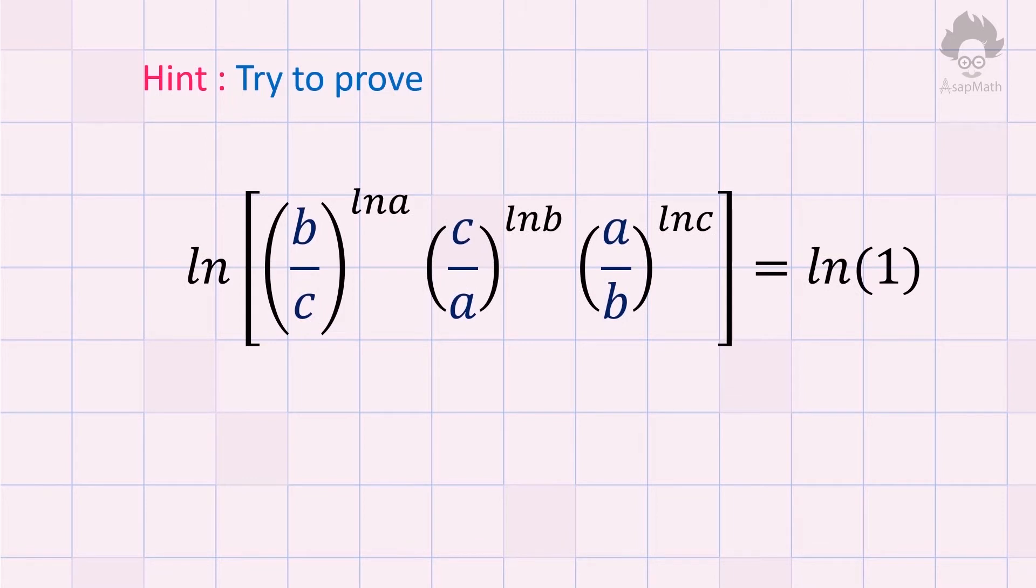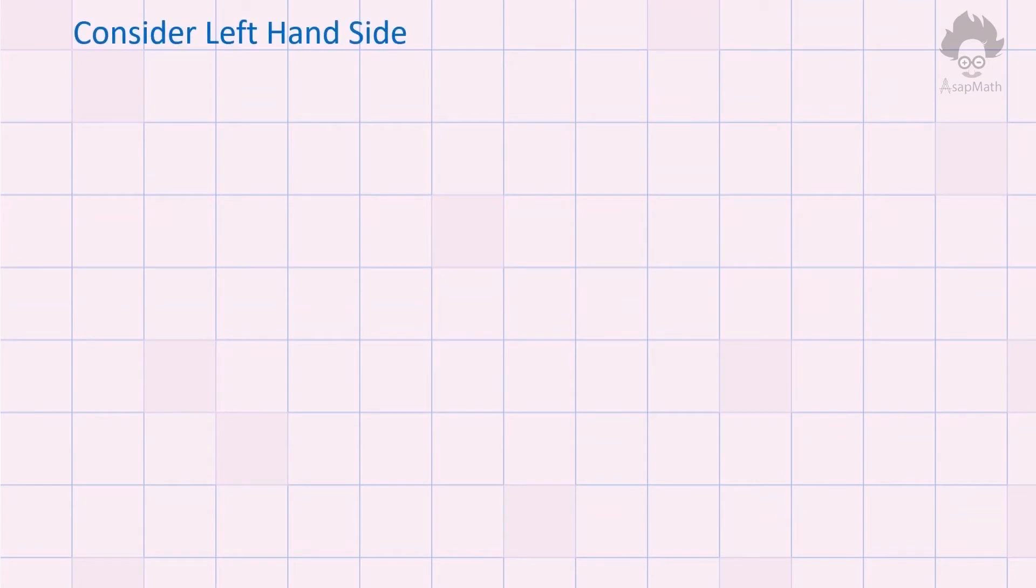Take the logarithm to base e on both sides. Logarithm to base e is depicted as ln, so we have to prove that the answer is ln(1). We will work with the left hand side and try to obtain the right hand side.